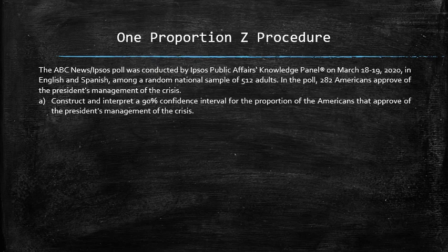Consider the following example. The ABC News Ipsos poll was conducted by Ipsos Public Affairs Knowledge Panel on March 18, 19, 2020 in English and Spanish among a random national sample of 512 adults. In the poll, 282 Americans approve of the president's management of the crisis. Construct and interpret a 90% confidence interval for the proportion of the Americans that approve of the president's management of the crisis.